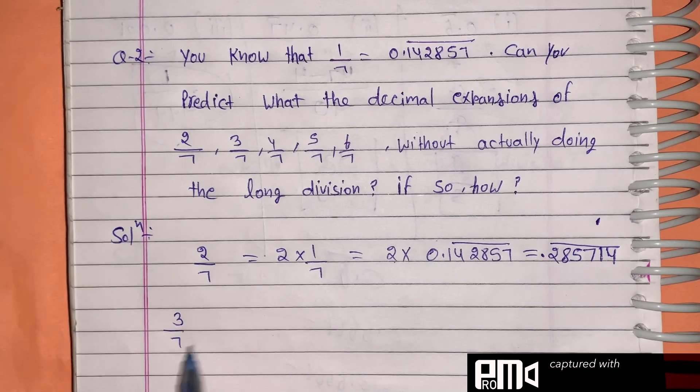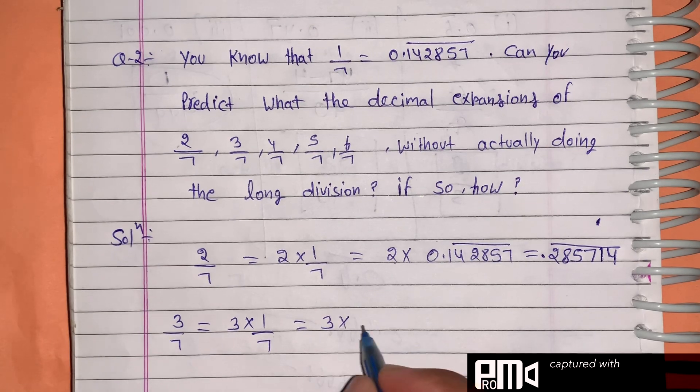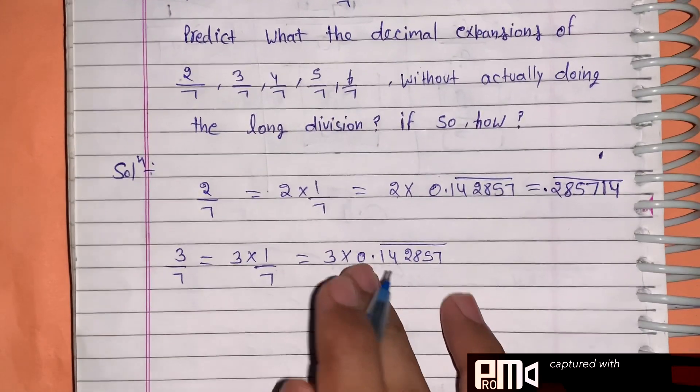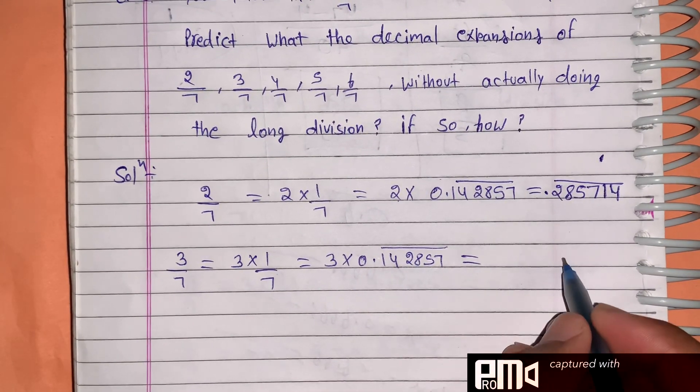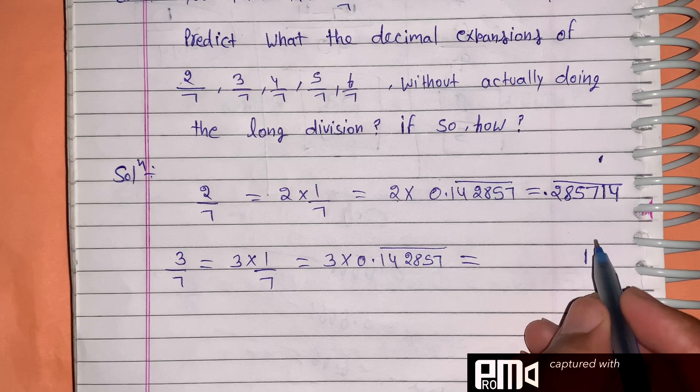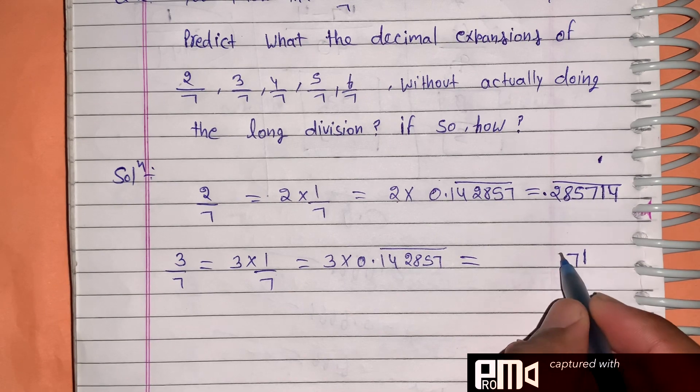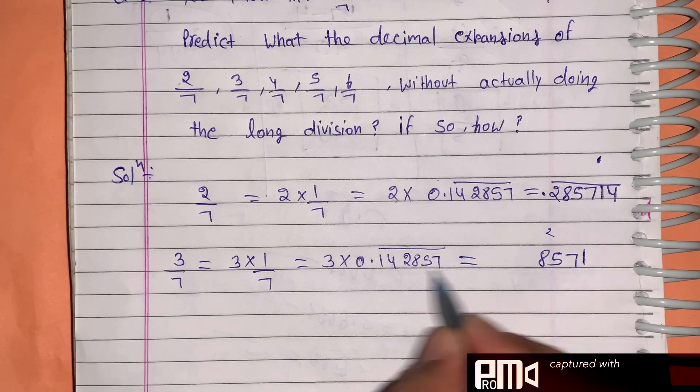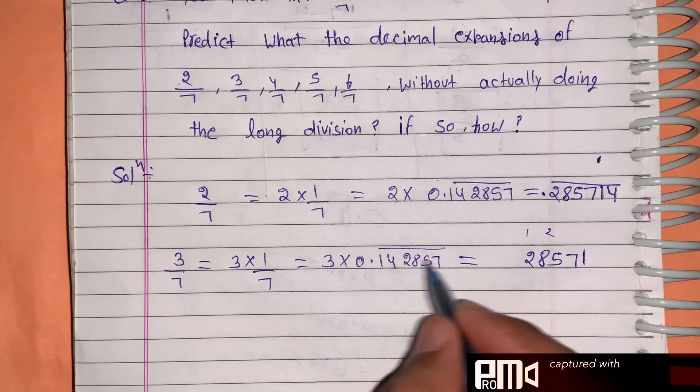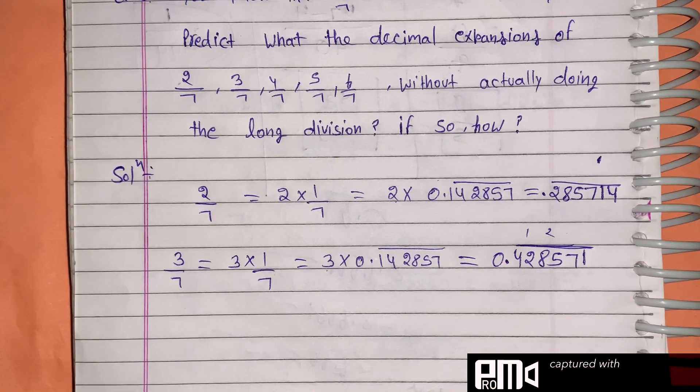Similarly, we can find 3/7. We write 3/7 as 3 times 1/7. The value is 3 times 0.142857. Multiplying: 3 times 7 is 21, carry 2; 3 times 5 is 15, plus 2 is 17, carry 1; continuing this multiplication, we get 0.428571 repeating.